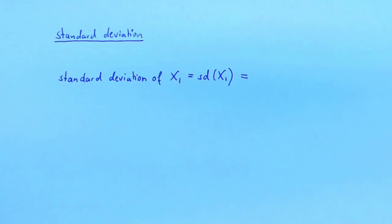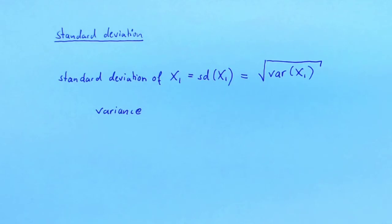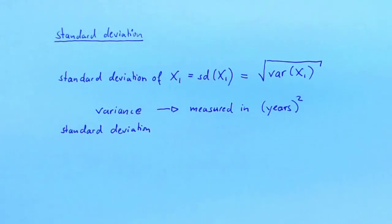A measure closely related to the variance is the standard deviation of a random variable. The standard deviation of x1 is defined as the square root of its variance. Why is it appealing to look at the square root of the variance? Remember that in defining the variance, we are squaring a difference. The squared difference is then measured, for example, in square years. Square years are very hard to interpret. By taking the square root, we return the units of measurement to simply years. You could say that the standard deviation measures the distance of the random variable from its expectation in the correct units of measurement.